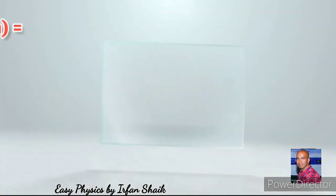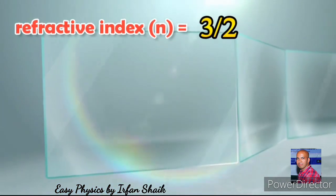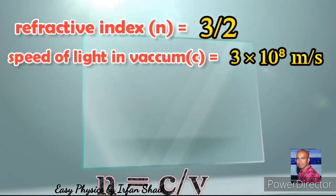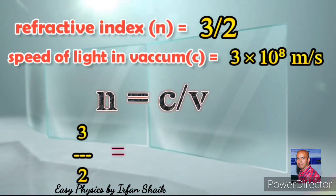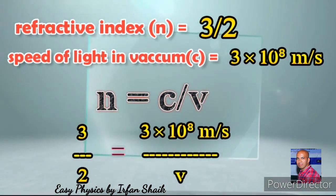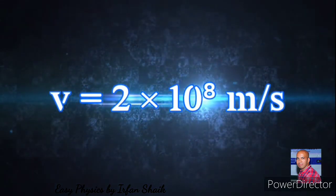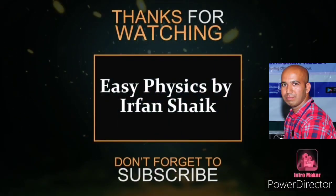In the problem, refractive index is given as three by two, and speed of light in vacuum we know is 3 into 10 to the power of 8 meters per second. n equals c by v is the formula. By substituting the values, we get three by two equals 3 into 10 to the power of 8 by v. After solving, we get v equals 2 into 10 to the power of 8 meters per second.